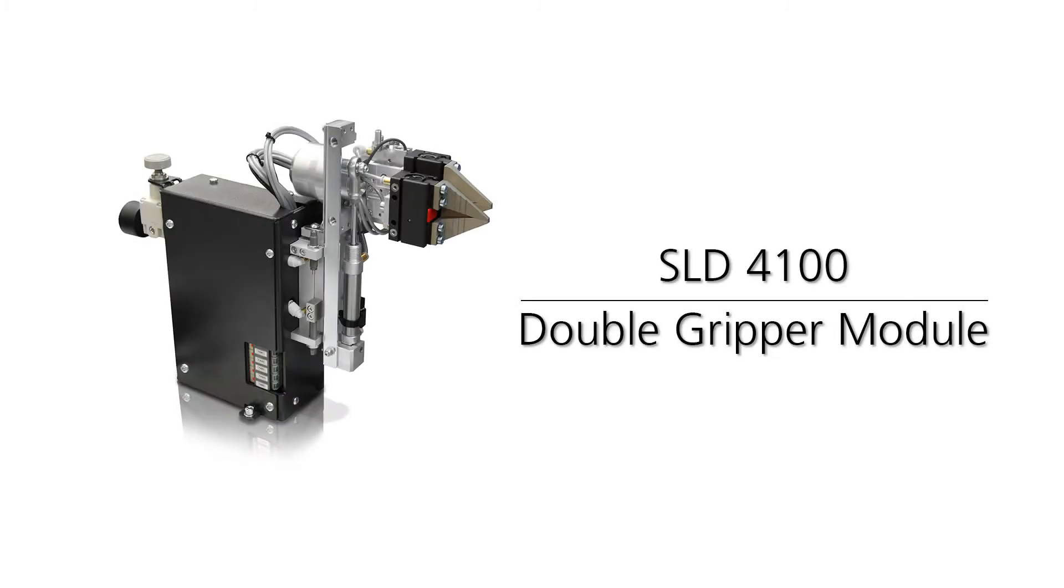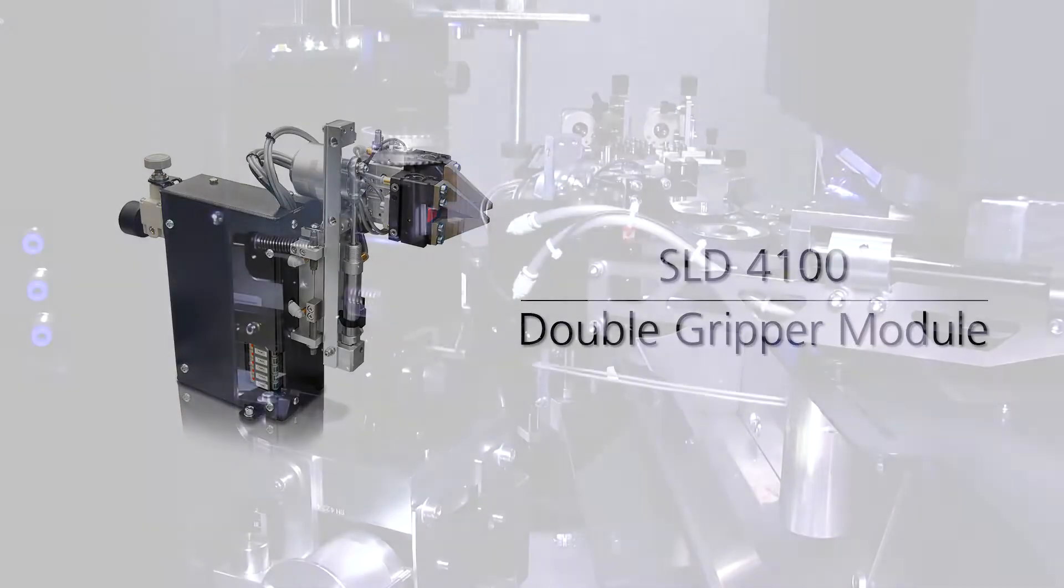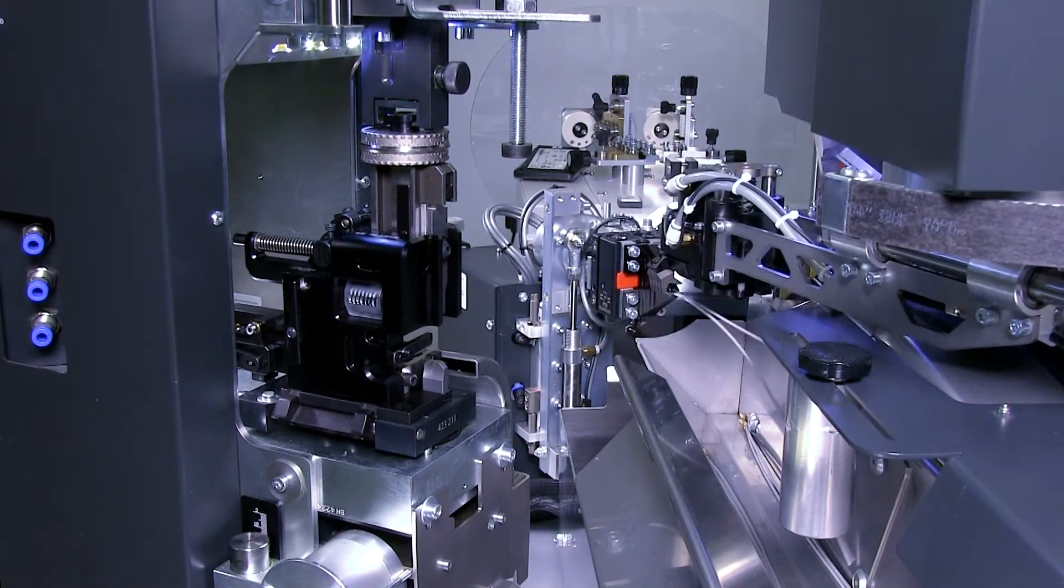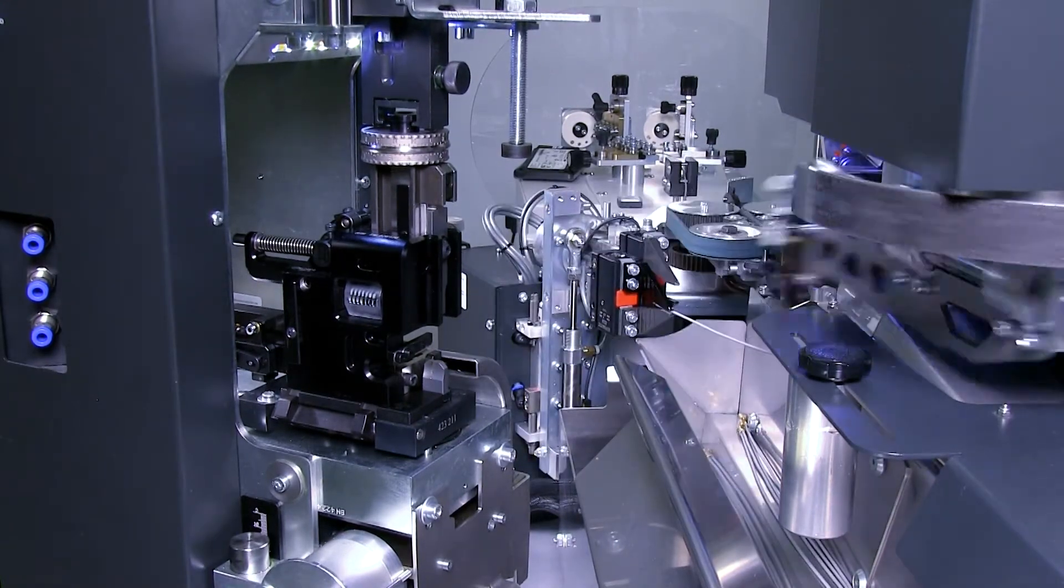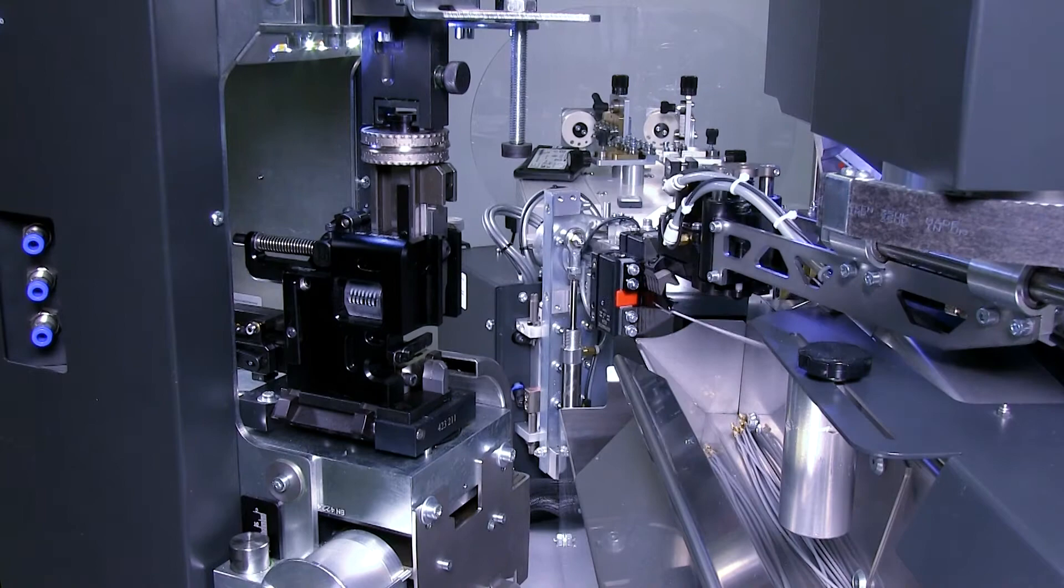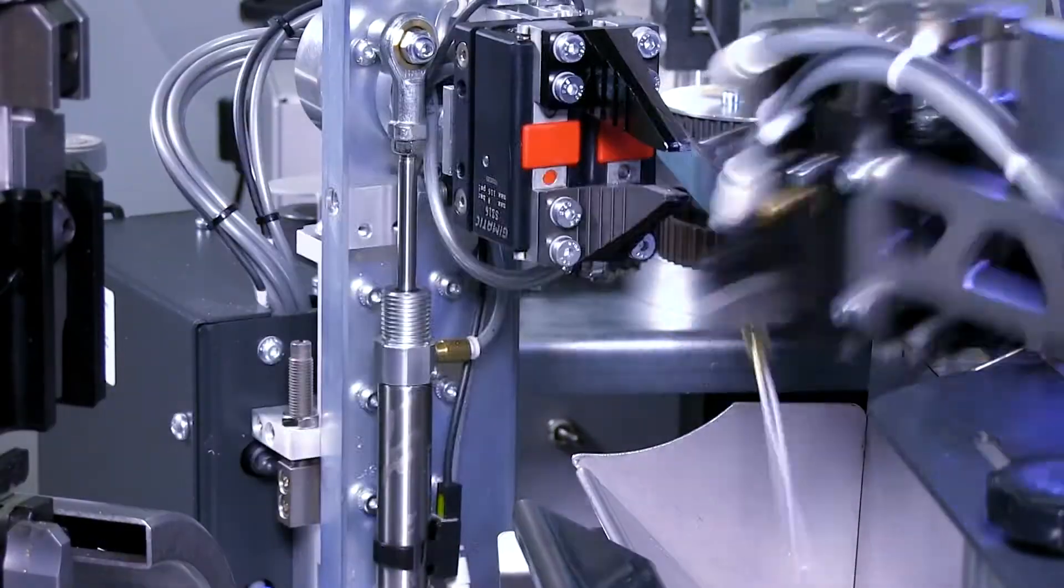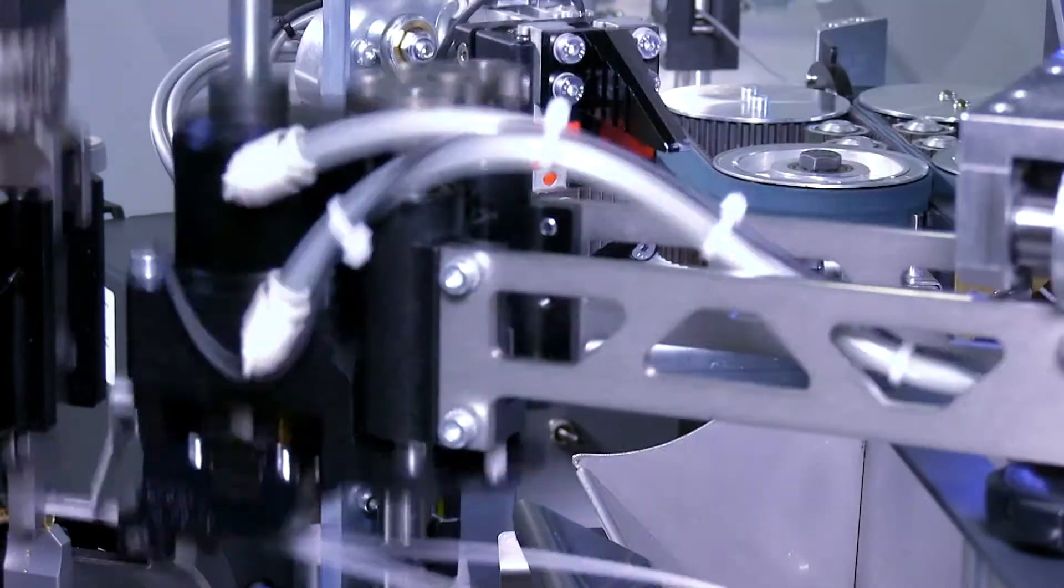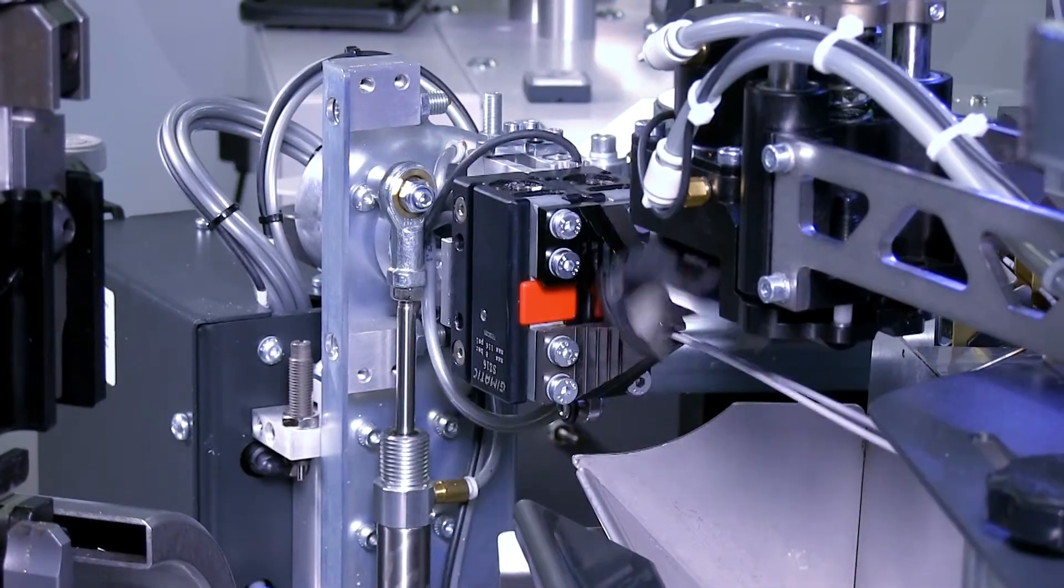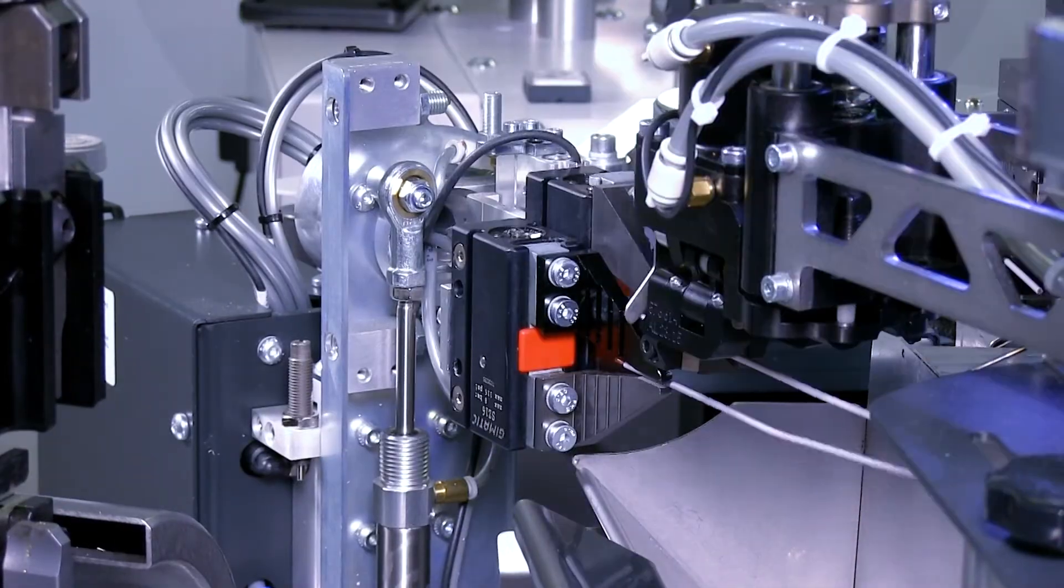The SLD4100 double gripper module can be used with all crimp center models for processing horizontal and vertical double crimp applications with wires up to 4 mm in diameter. The module gathers two single wires in the proper orientation, allowing the swivel arm gripper to collect them.